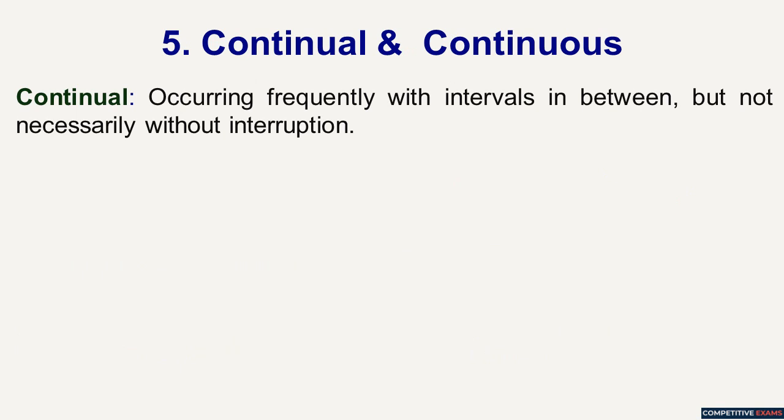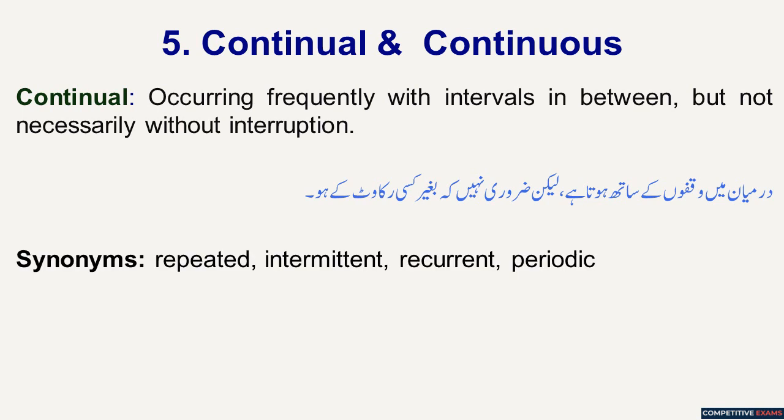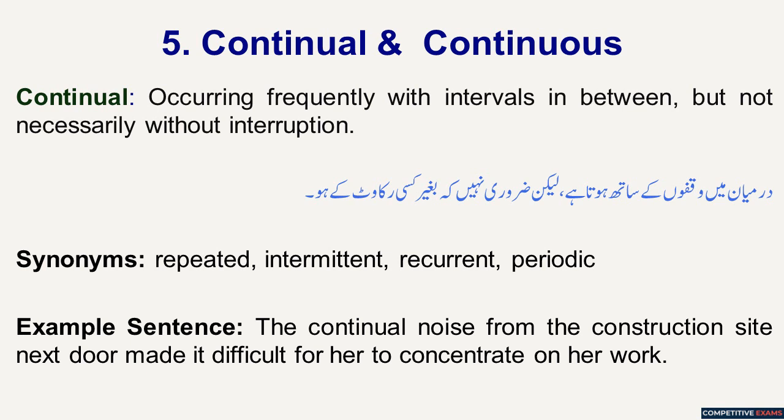Continual and Continuous. Continual means occurring frequently with intervals in between, but not necessarily without interruption. Yani kisi cheez ka waqea hona lekin darmiyan mein waqfa waqfa ke saath. Its synonyms are repeated, intermittent, recurrent and periodic. Example sentence: The continual noise from the construction site next door made it difficult for her to concentrate on her work.